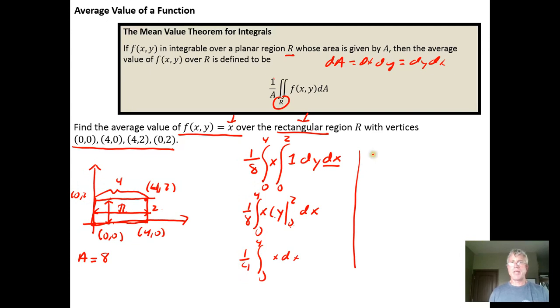And now we integrate with respect to x, so we're going to get 1/4 times 1/2 x squared from 0 to 4, and the 1/2 is a constant that can be factored out so that's just 1/8.